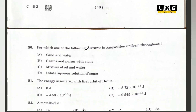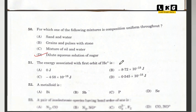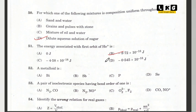Question number 50: for which of the following mixtures is the composition uniform throughout? Option D — this is a simple ninth standard question. Question number 51: the energy associated with the first orbit of He⁺ is option B — from the structure of atom chapter, which is a first year chapter.